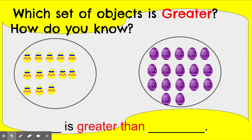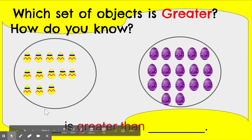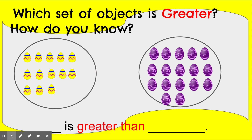Let's do another practice. Which set of objects is greater and how do you know? We have these yellow Easter eggs and these purple Easter eggs. The first thing we need to do is count them. I'm going to touch and count the yellow eggs: one, two, three, four, five, six, seven, eight, nine, ten, eleven, twelve, thirteen. I counted thirteen yellow eggs.